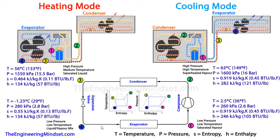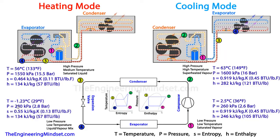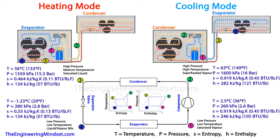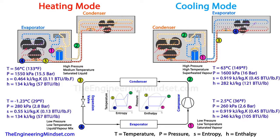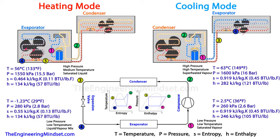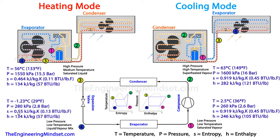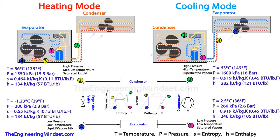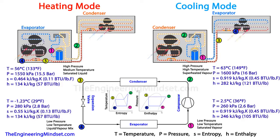The refrigerant then makes its way from Point 4 back to Point 1, passing through the evaporator. There you can see some increase in temperature and a slight pressure drop due to resistance to flow. The pressure drop here may differ from the condenser side — in real life, even with identical coils, pressure drops won't necessarily be exactly the same. Both entropy and enthalpy increase back to their values at Point 1.